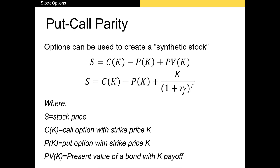Now let's talk about the put-call parity formula. This formula says that the price of any stock S should equal the value of a call option with strike price K, minus the value of a put option with strike price K, plus the present value of a bond with face value K. The present value of that bond is K divided by (1 plus the risk-free rate) to the power of T. Together, the call, short put, and bond form what's called a synthetic stock. The negative sign on the put indicates we're taking the short position — selling the put rather than buying it.